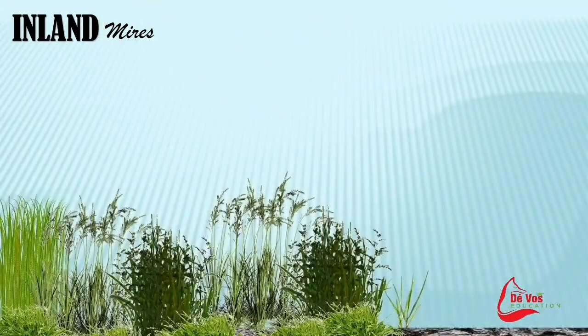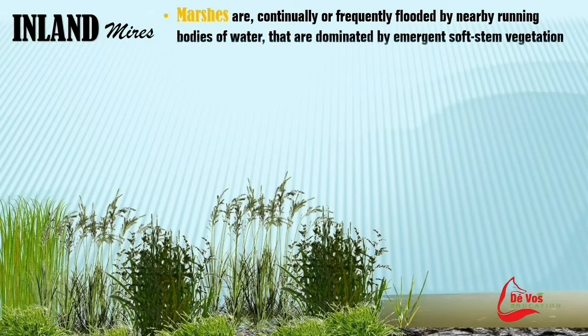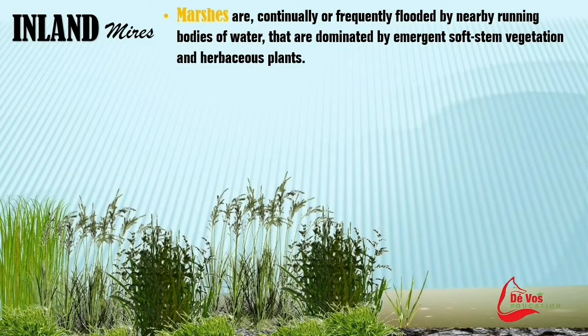Marshes are continually or frequently flooded by nearby running bodies of water and are dominated by emergent soft-stem vegetation and herbaceous plants.